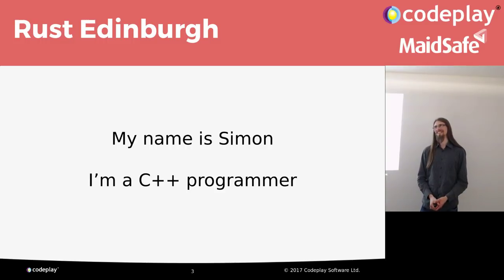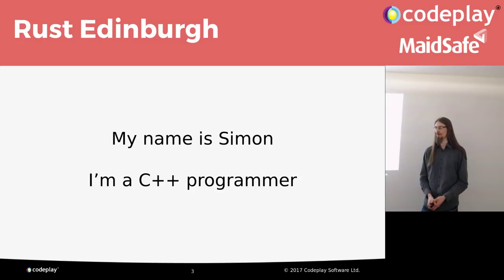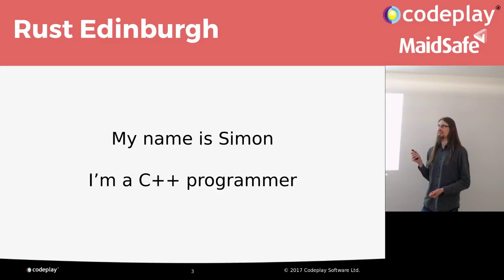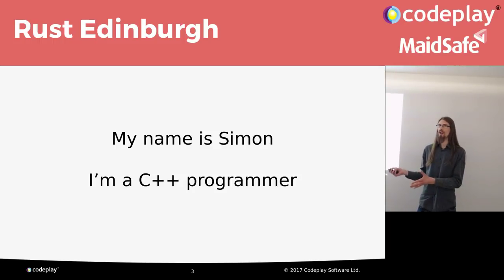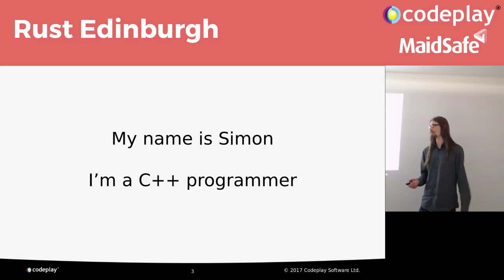I am what you might call a beginner in Rust. I'm a C++ expert. I spend most of my time writing C++, writing compilers, debuggers, profilers, doing standards work, all this kind of stuff. But my Rust is not fantastic, so if I do anything non-idiomatic or anything that looks weird, it's not because I'm being smart, it's because I'm being wrong. Please tell me if you see something you do not agree with.